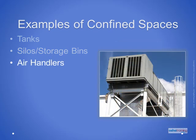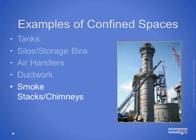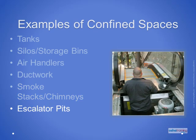One commonly overlooked confined space is an air handler, where the worker enters through an access panel and climbs inside to perform work. Other examples include ductwork large enough for a worker to bodily enter through an access panel or hatch, or where the worker enters an open end and travels into the duct. Some smokestacks and chimneys would be considered confined spaces when the worker must enter through a hatch or other restricted means of entry. Escalator pits that are large enough for a worker to bodily enter and are deep enough to make it difficult to exit would also be considered confined spaces.